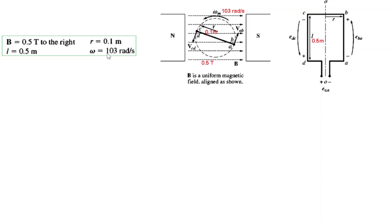And omega is the rotational frequency or rotational speed, 103 radians per second rate is rotating at this speed.